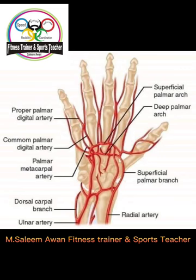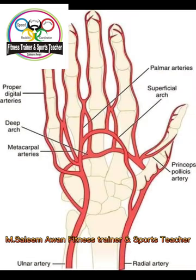First we shall discuss about the carpal bones. Carpus means wrist. It consists of eight carpal bones arranged in two rows — a proximal row and a distal row. Each row consists of four bones. First we shall list out the proximal row from lateral to medial side.